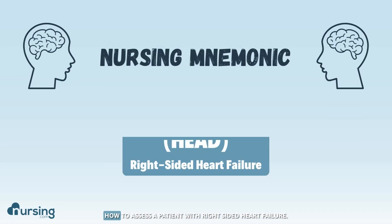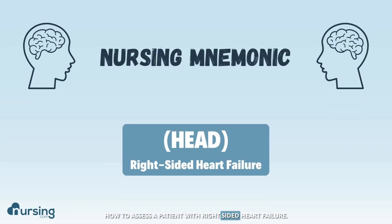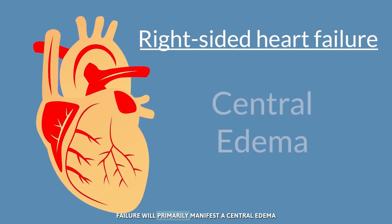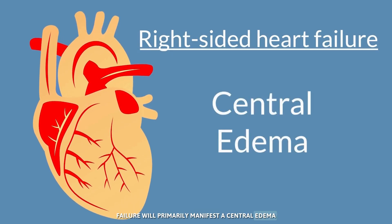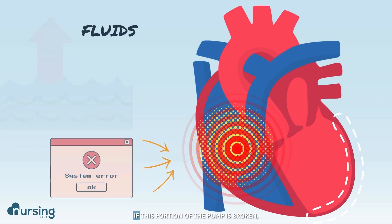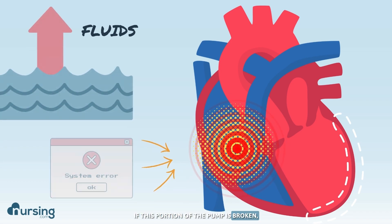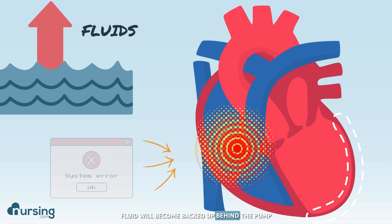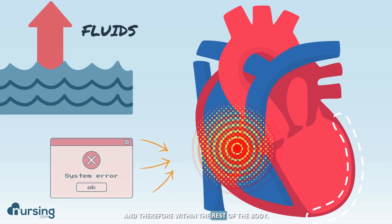In this mnemonic, we're going to talk about how to assess a patient with right-sided heart failure. Right-sided heart failure will primarily manifest as central edema, as the right side of the heart takes fluid from the body and moves it forward. If this portion of the pump is broken, fluid will become backed up behind the pump and therefore within the rest of the body.